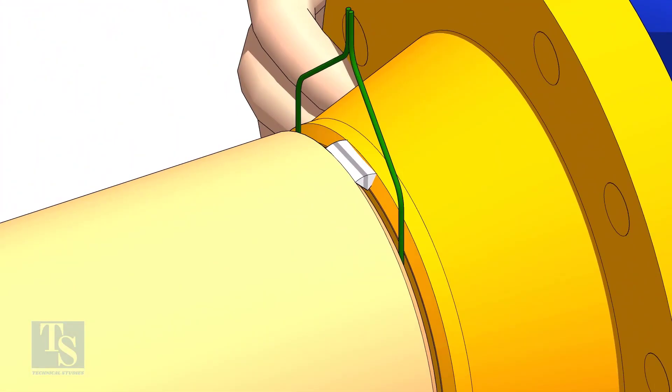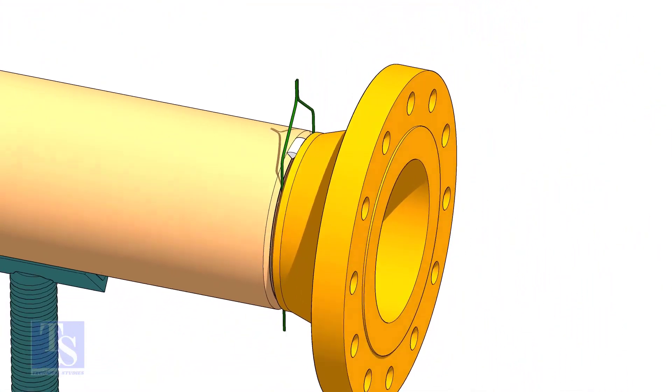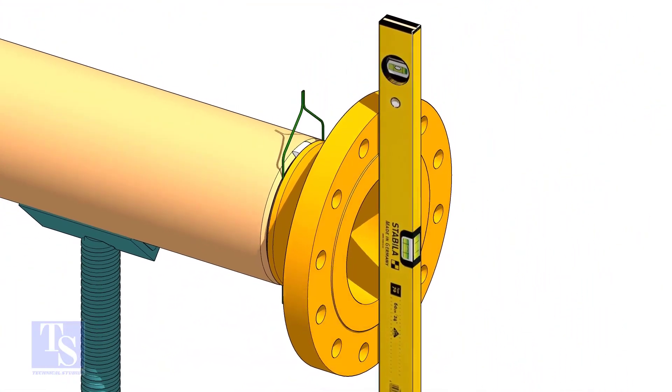Tac weld on the top side of the joint. Check the level of the flange vertically and tac weld on the bottom side of the joint.